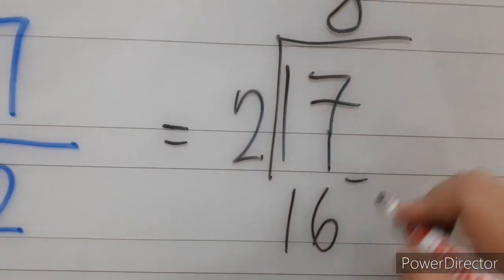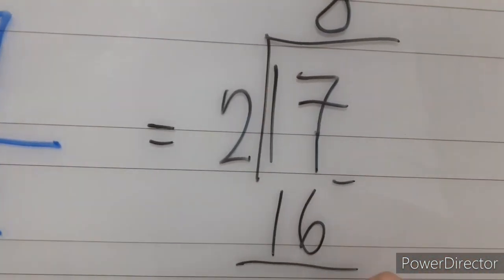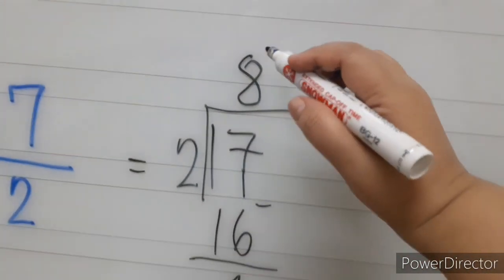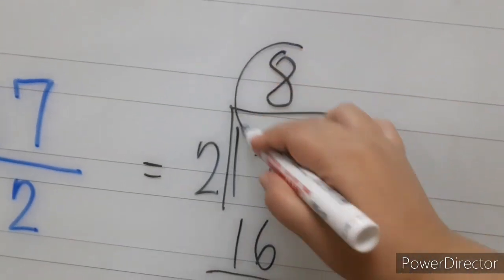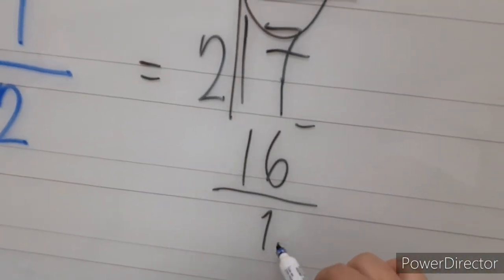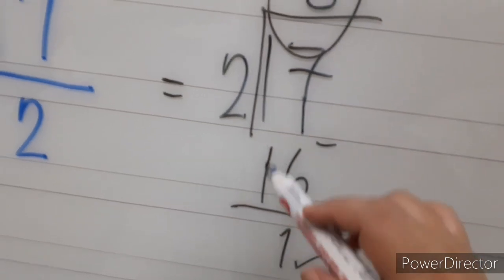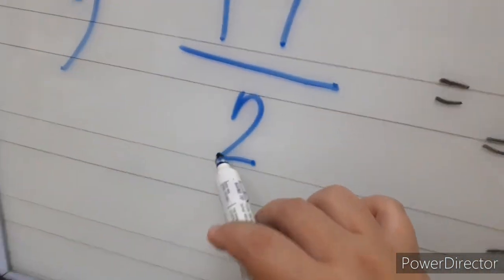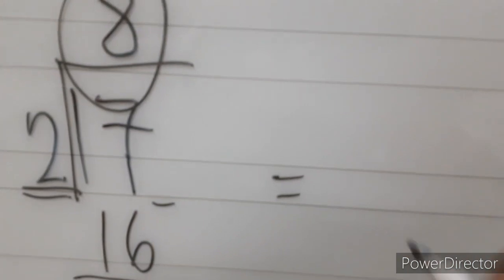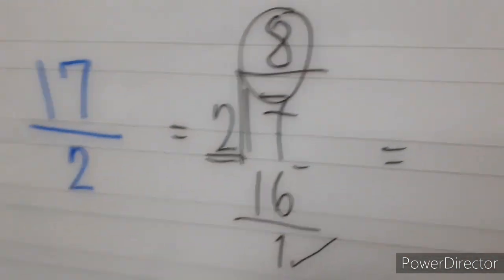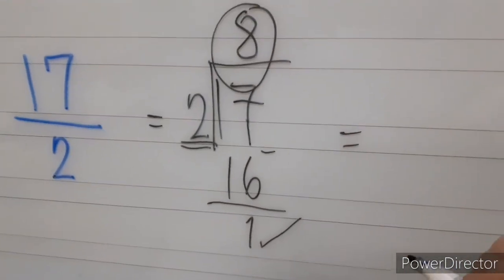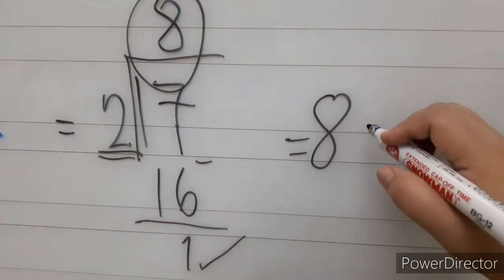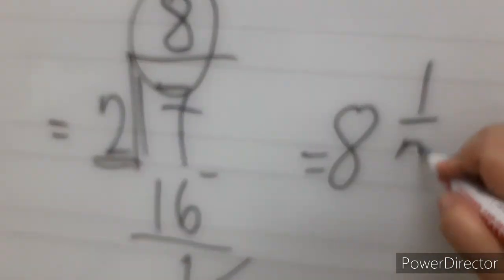Then 17 minus 16, we have 1. So again, this is our whole number. The remainder is the new numerator. And we simply copy the divisor or the denominator. So 17 halves is now equal to 8 and 1 half.